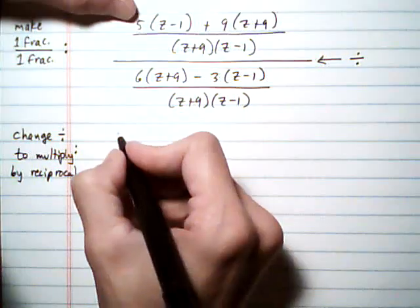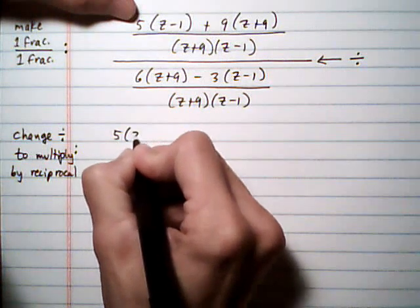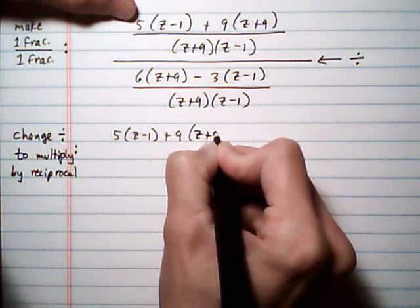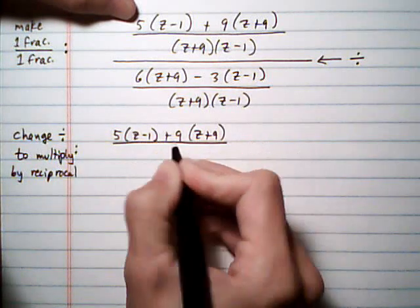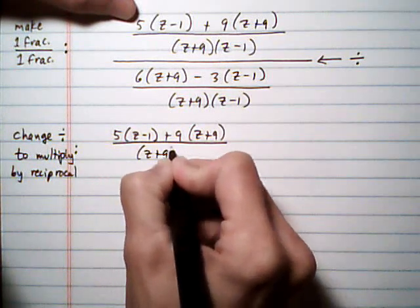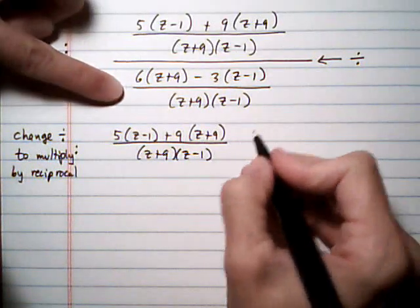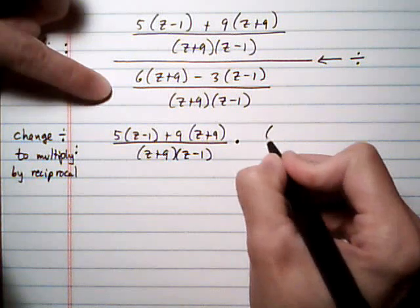All right, so we have 5 times z minus 1 plus 9 times z plus 9, all over z plus 9, z minus 1. Instead of being divided by the bottom, we're going to multiply by the reciprocal of the bottom.